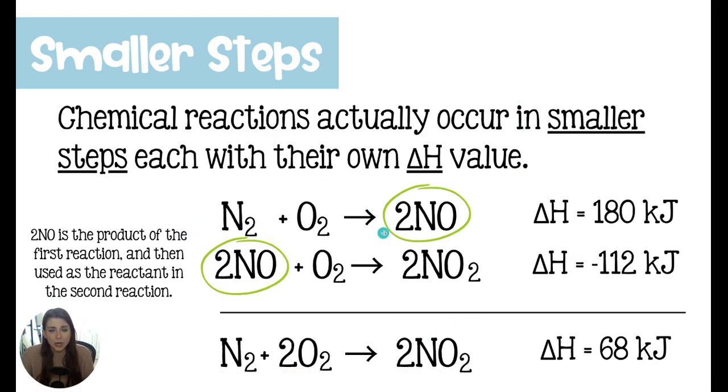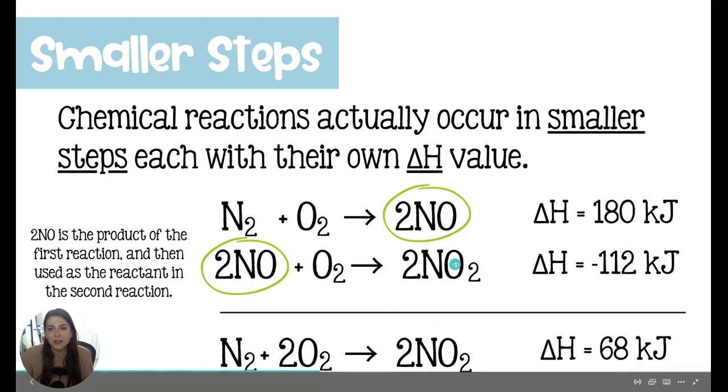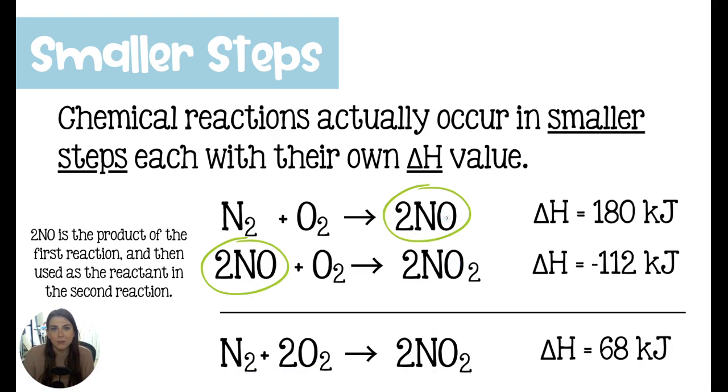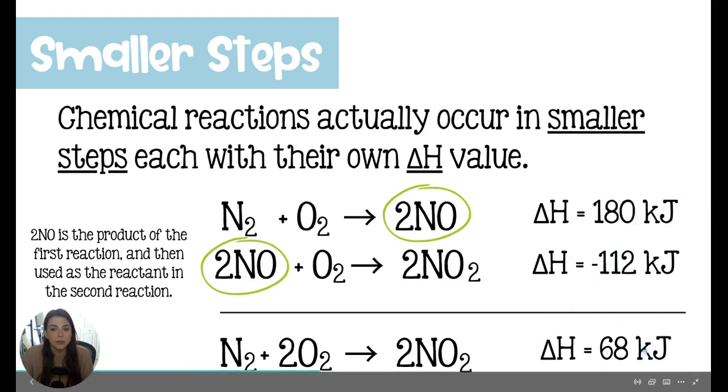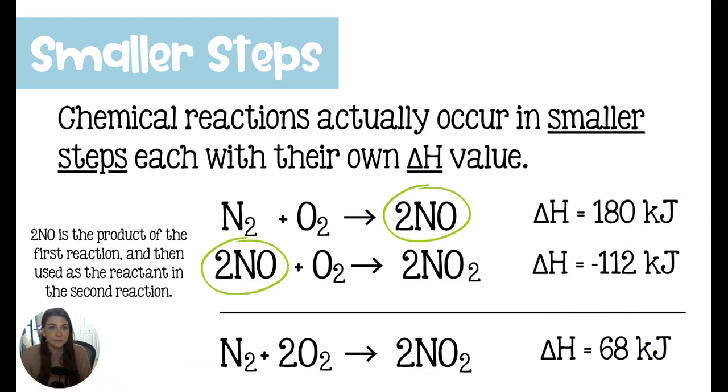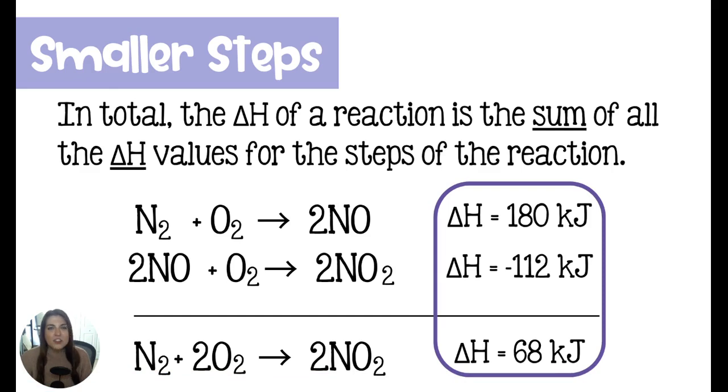So because it's a product in the first and a reactant in the second, we don't write it in the final reaction. It's kind of like math, where if you have the same thing on both sides, you can cancel it. That's what we're doing here. Our ΔH, we have 180, that's a positive 180. We have a negative 112. In total, our ΔH is going to be representing a 68 kilojoule exchange. The ΔH of the final reaction is going to be the sum or the total of the ΔH values for each step of the reaction.